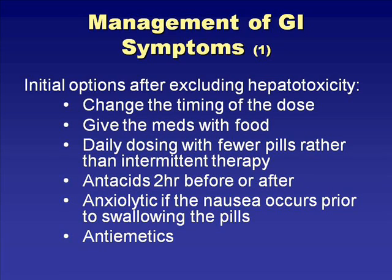For some patients, pill burden is the issue. Changing from daily therapy to intermittent therapy—twice or three times weekly—increases the number of pills per dose, and the nausea is related to that pill count. Going back to daily dosing can alleviate this for certain patients. If acid reflux may be contributing, antacids can be used, but should be taken either two hours before or two hours after the TB medications to avoid impacting drug absorption.